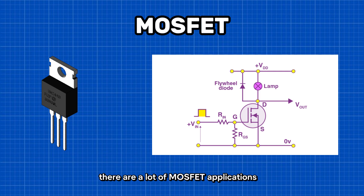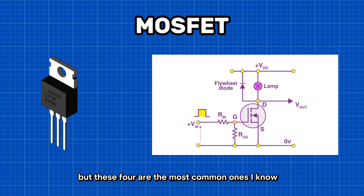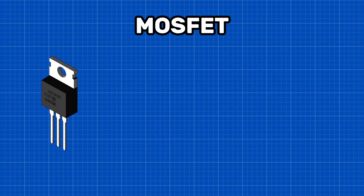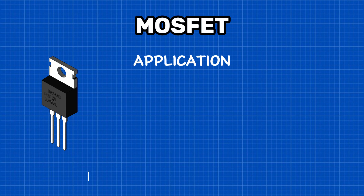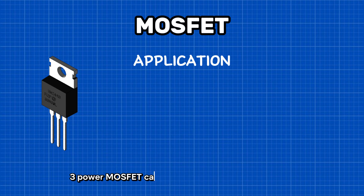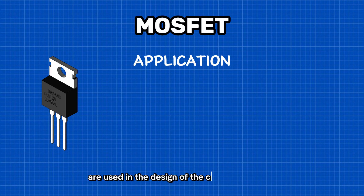There are a lot of MOSFET applications, but these four are the most common ones. One: MOSFET amplifiers are widely used in radio frequency applications. Two: MOSFET behaves as a passive circuit element. Three: power MOSFETs can be used to regulate DC motors. Four: MOSFETs are used in the design of the chopper circuit.